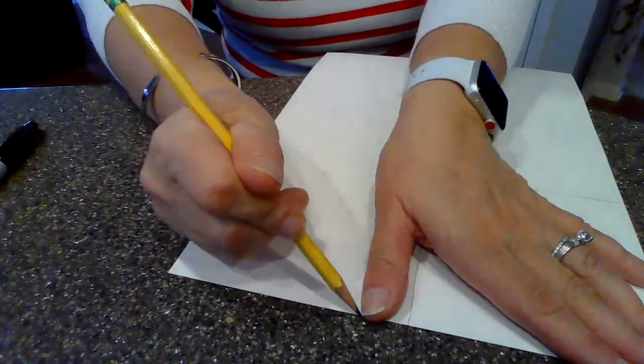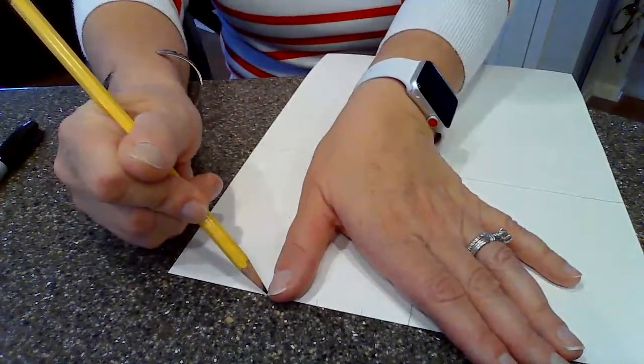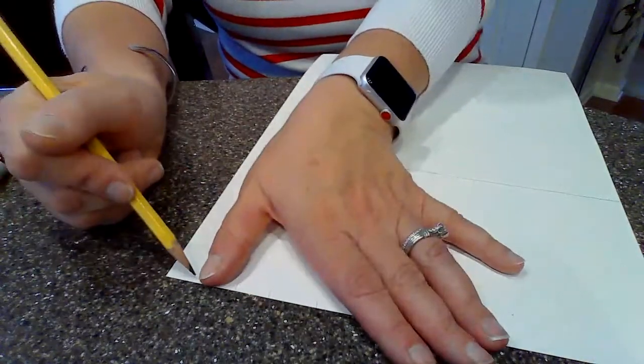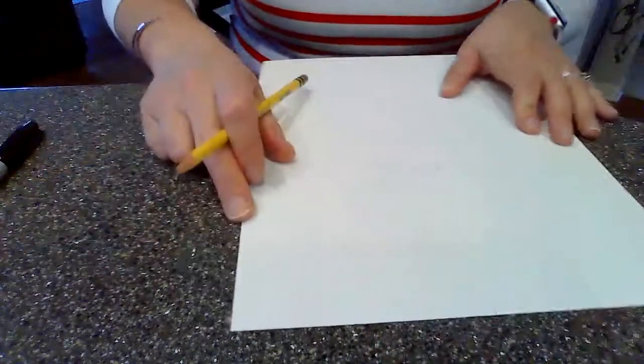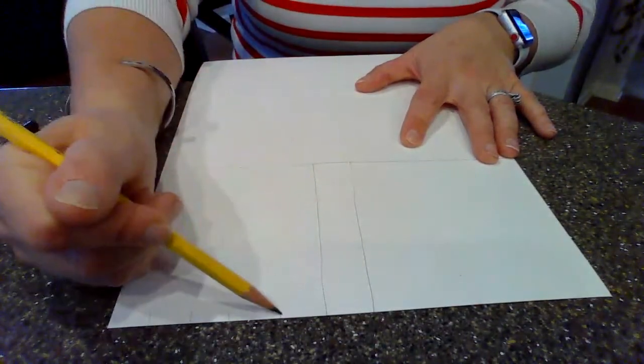You can also just eyeball it. You can do your thumb, and every time you do your thumb, you're going to make a little hash mark. So there's three, four, and five. I think my thumb is pretty good at measuring that.